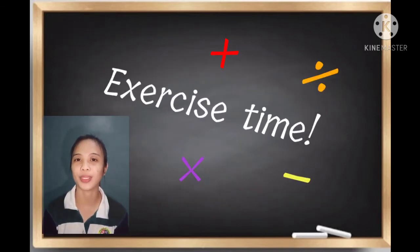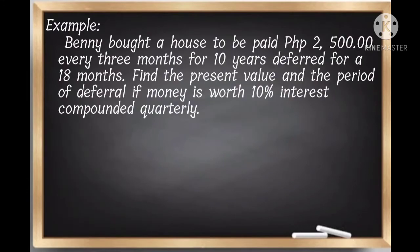Let's try this example. Benny bought a house to be paid 2,500 pesos every 3 months for 10 years, deferred for 18 months. Find the present value and the period of deferral if money is worth 10% interest compounded quarterly.